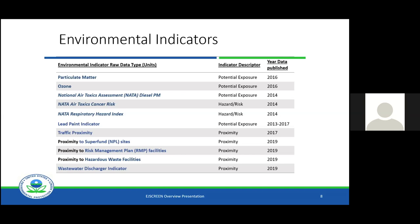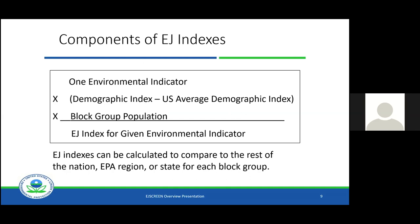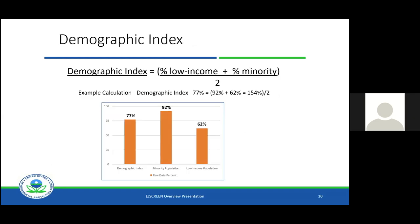These are the environmental indicators. Each one becomes a single component of that EJ index, so you're going to have an EJ index for each one of these environmental indicators. The EJ index takes one of those indicators, multiplies that by how different the demographic index is from the US average, and then multiplies that by the population of the block group.